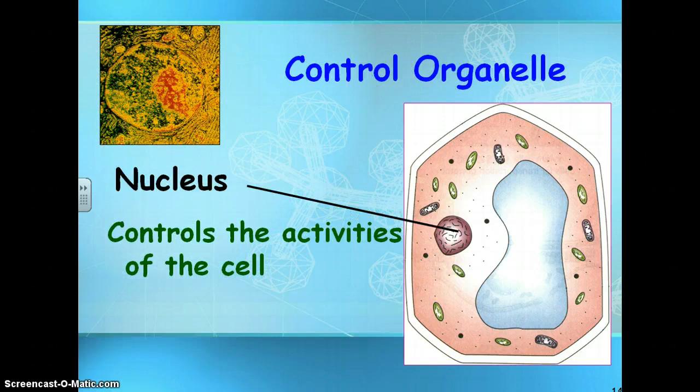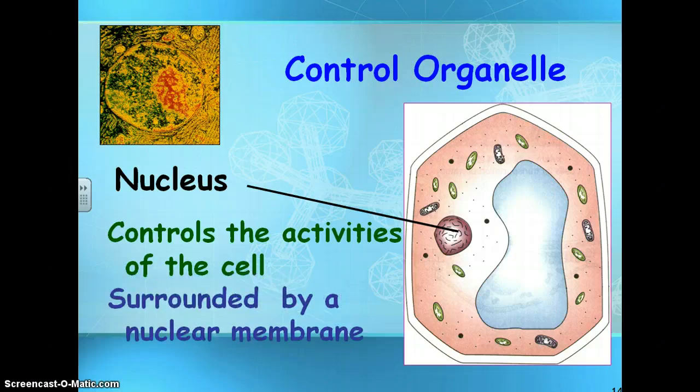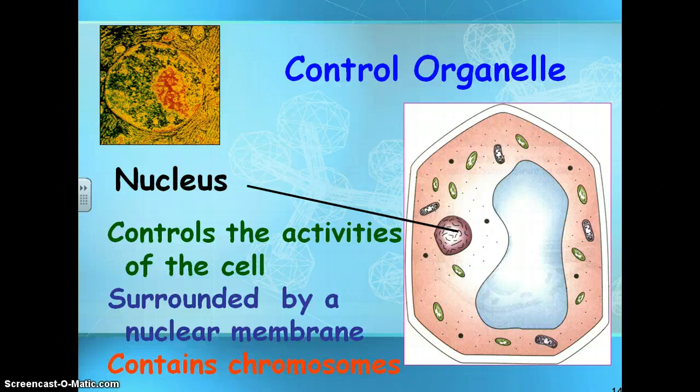You have the nucleus that controls the activities of the cell. It's surrounded by a nuclear membrane, and it has the DNA. DNA are chromosomes — remember that genetic material, DNA and chromosomes, are the same thing.